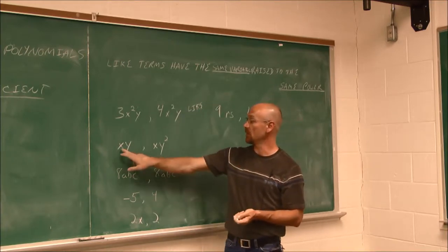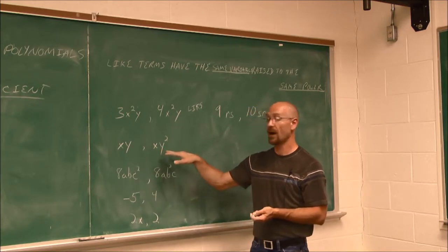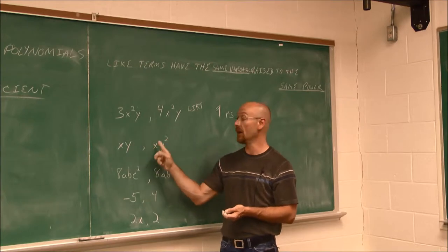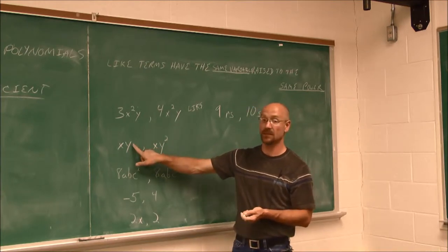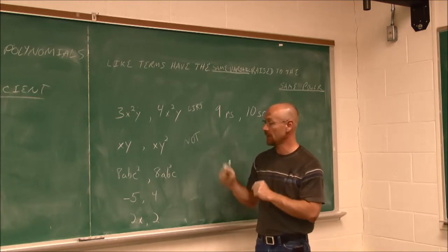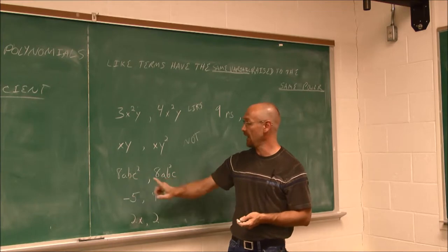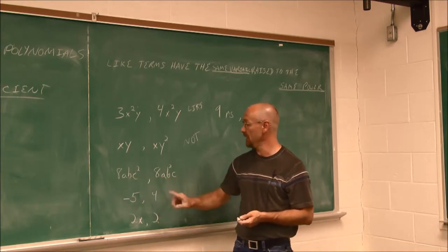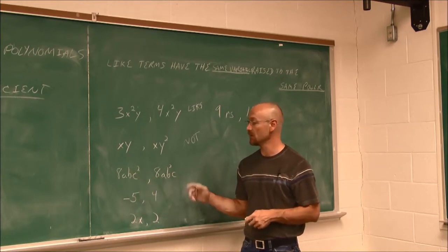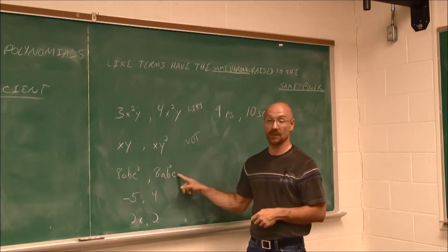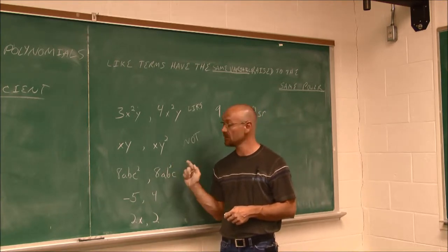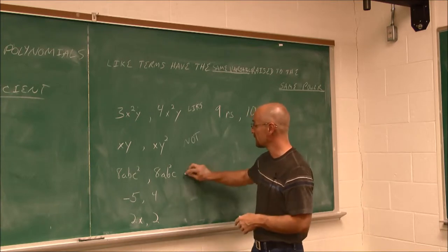If we look at this one, they both have x and both have y. But the powers of the x are the same while the powers of the y's are not. So since this is y squared and this isn't, these are not like terms. If we look at this, we have a and a, we have b and b squared, and c squared. We can see they have the same variables, but each separate variable does not have the same power. So these are not like terms.